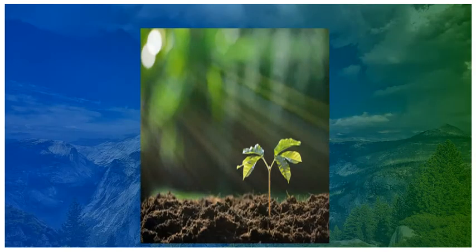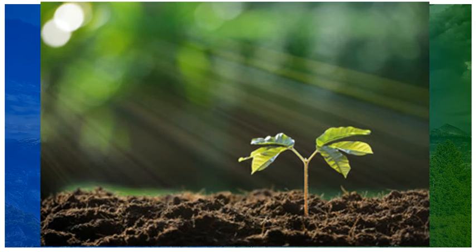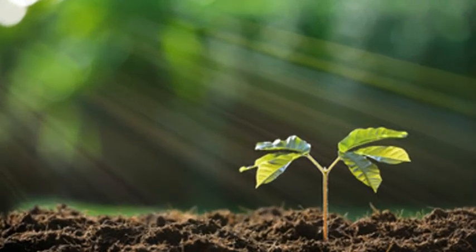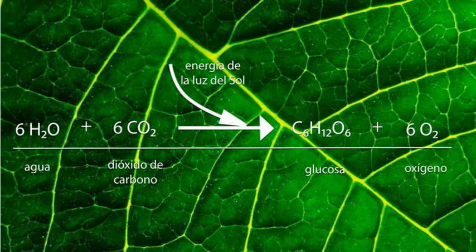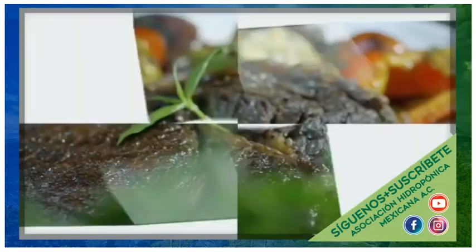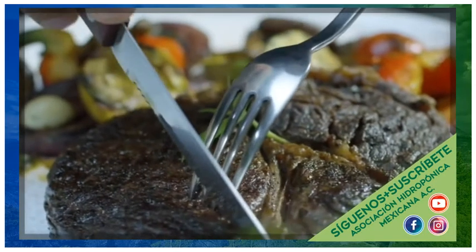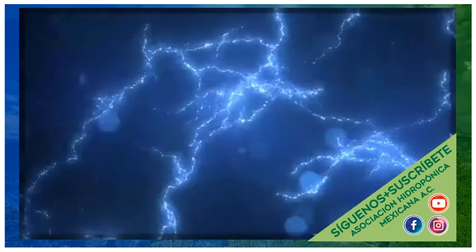Sin embargo, las plantas, a diferencia de todos los demás organismos vivos, son los únicos seres capaces de asimilar de manera directa la energía. Es decir, son los únicos que pueden convertir energía lumínica a energía química: absorben la energía proveniente del sol para realizar sus procesos metabólicos, mediante los cuales transforman el bióxido de carbono a hidratos de carbono, dándonos todo tipo de vegetales. Nosotros, en cambio, convertimos la energía química que hay en un alimento a energía cinética o movimiento.